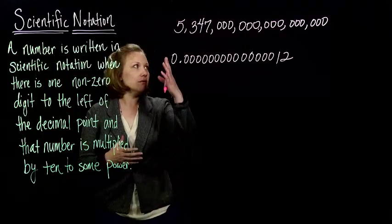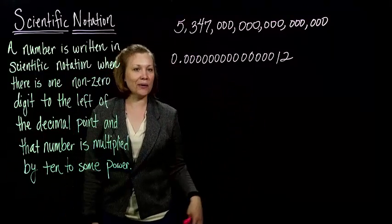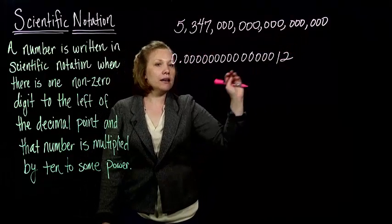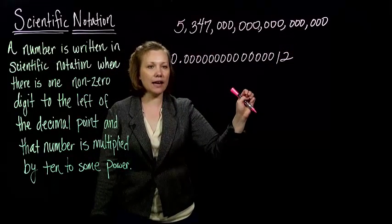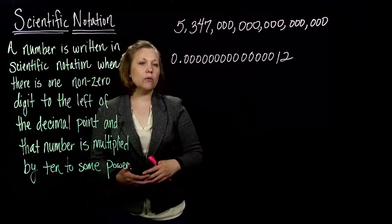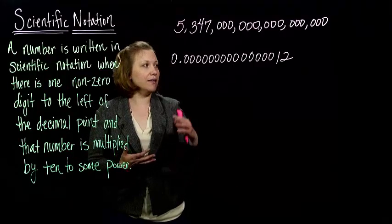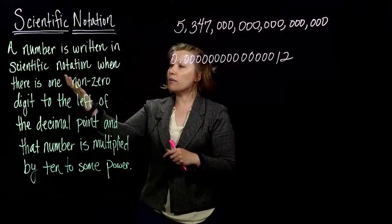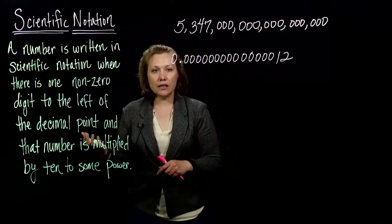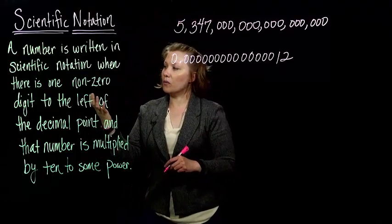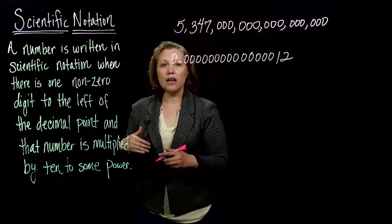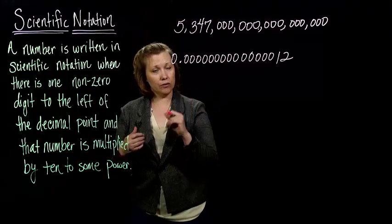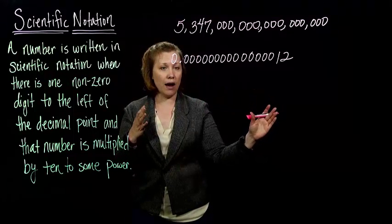I've got an example of a couple of numbers up here. They're arbitrary numbers — they don't really pertain to anything. But if we've got this huge number with all these zeros, or this really, really tiny number representing something, we like to have an easy way to write this. The easy way, or the nicer way to write this, is what we call scientific notation. Scientific notation is just when we have a number written so that it only has one non-zero digit to the left of the decimal — so in front of the decimal — and then it's times 10 to some power.